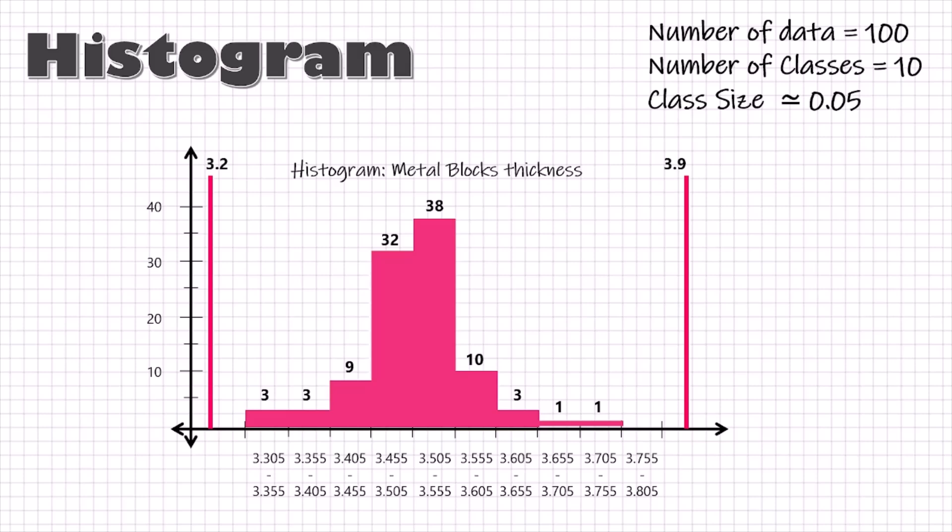Once we have plotted this data, the first question to ask is what is the most common thickness of the metal blocks? How much is the distribution? What is the shape of the distribution? Is the distribution symmetrical?